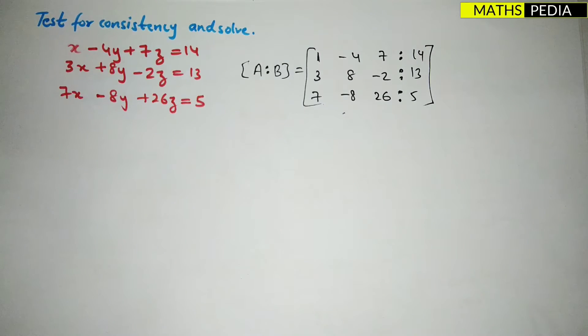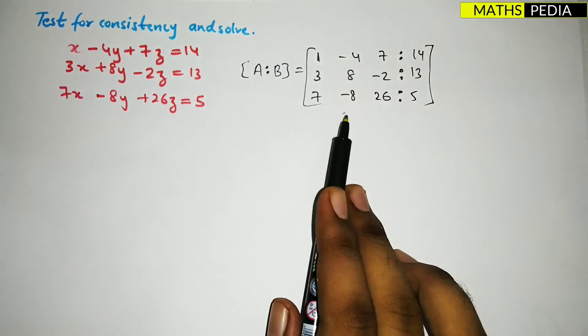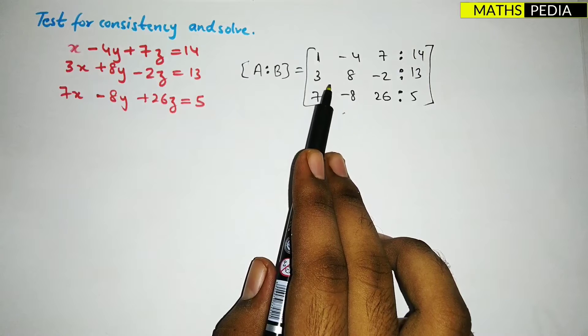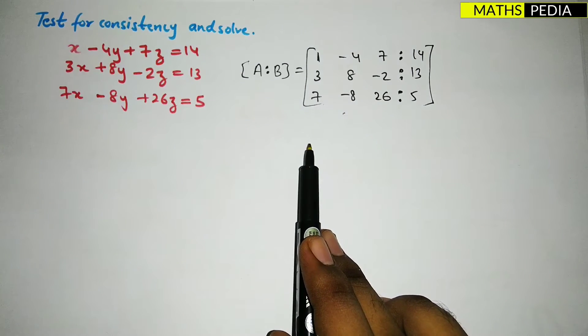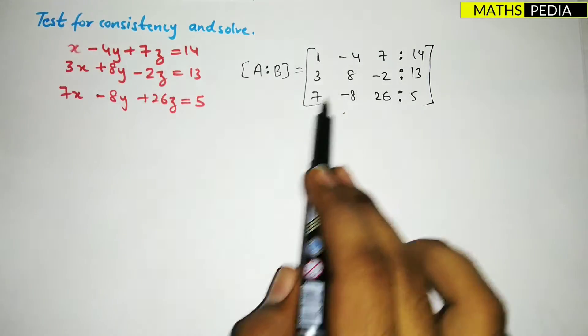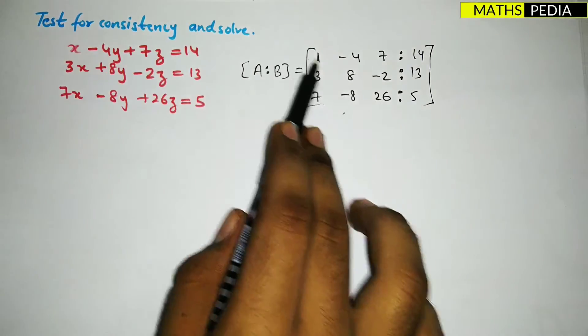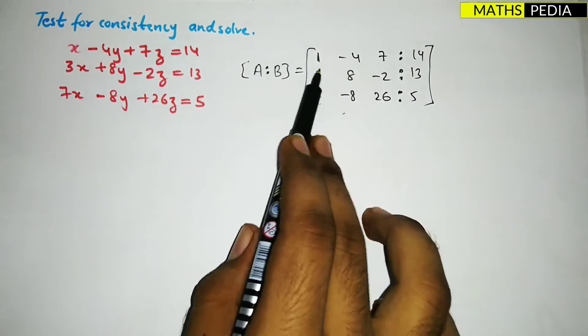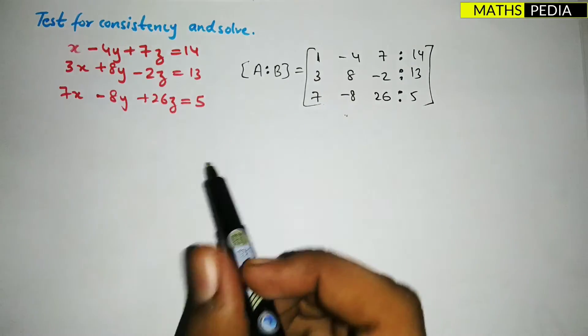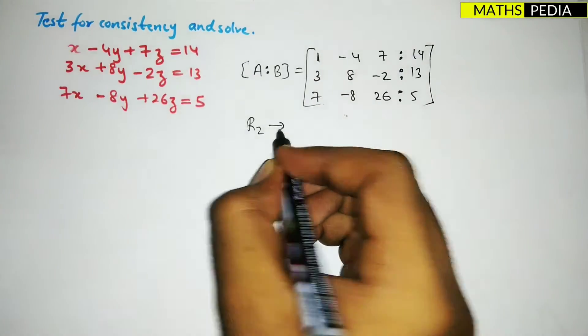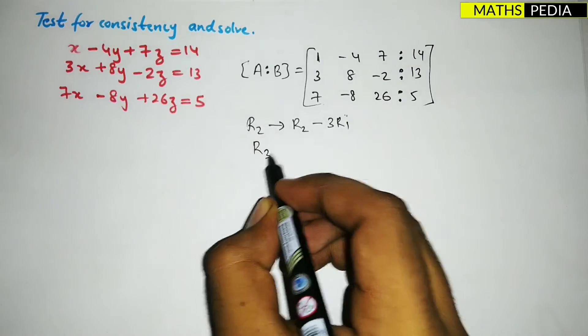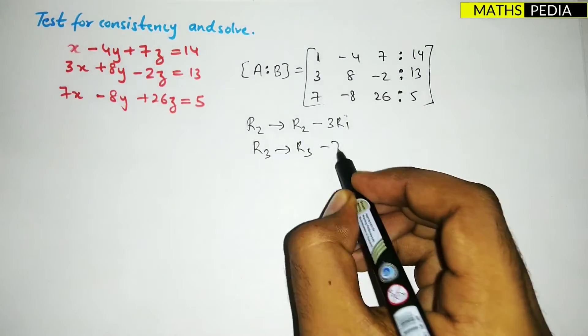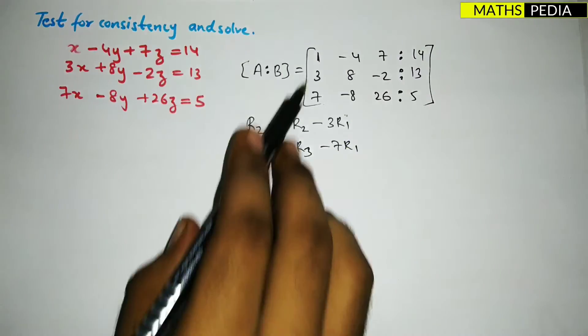Now step two is you have to reduce this matrix A into echelon form. How to reduce? Apply operations to make the elements below the diagonal zero. So I'll apply R2 is R2 minus 3R1, and R3 is R3 minus 7R1. Since it is 1, it is easy to reduce.